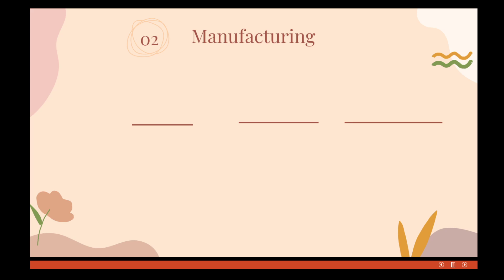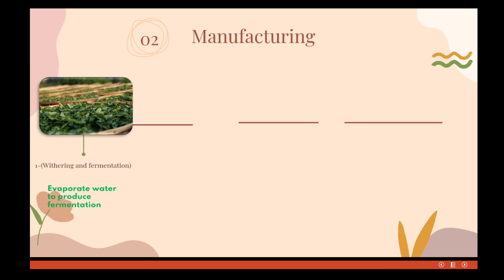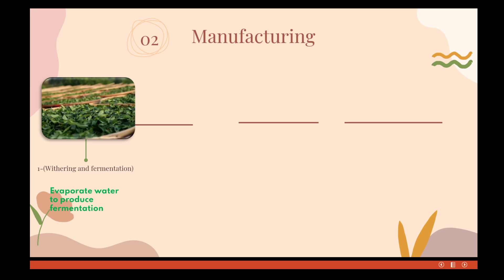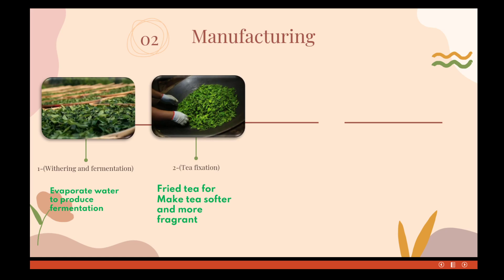The second stage of the life cycle of the tea is called manufacturing. After tea harvesting, the tea must first be put in the air to lose part of the moisture inside — this process is called withering. The water must evaporate from the leaf edges or stomata through the leaf vents, and every part of the cell must lose part of the water to produce better fermentation. The second step is called tea fixation.